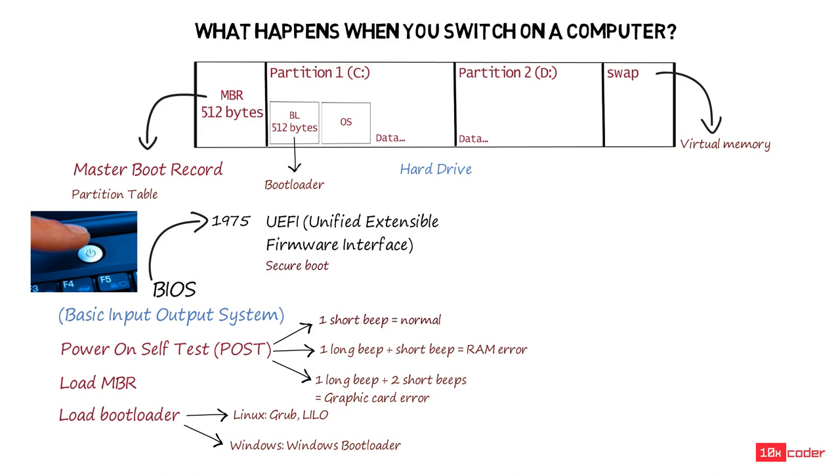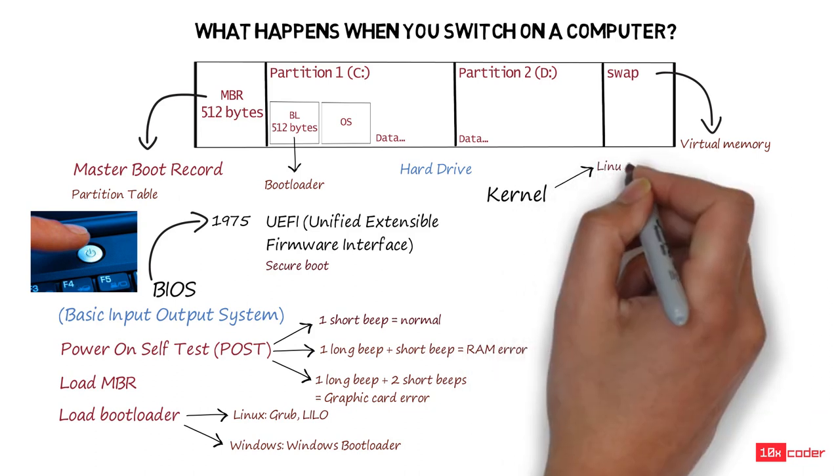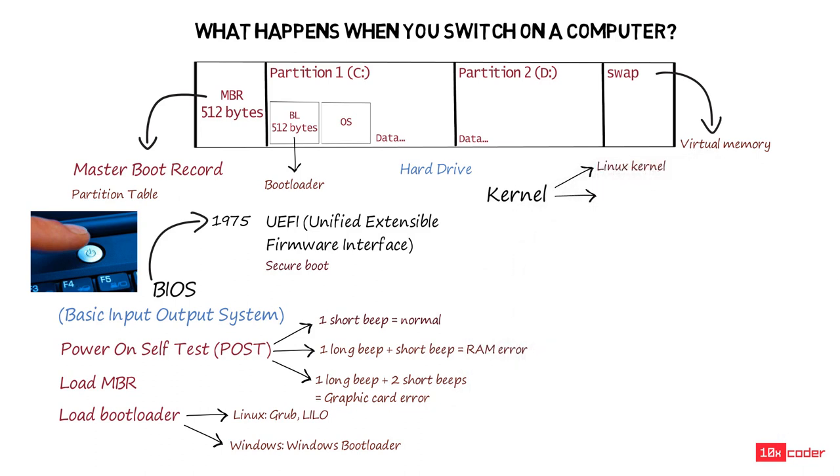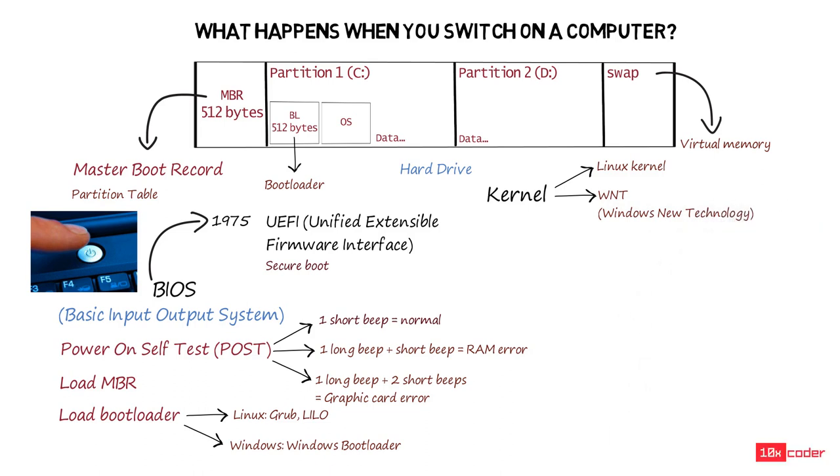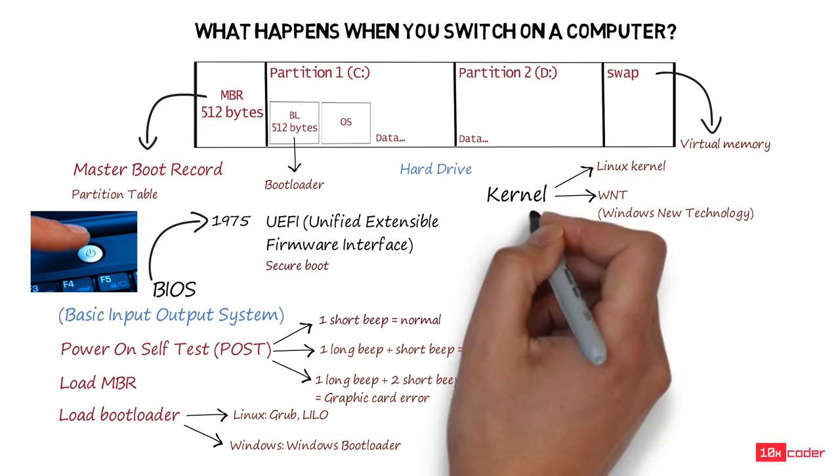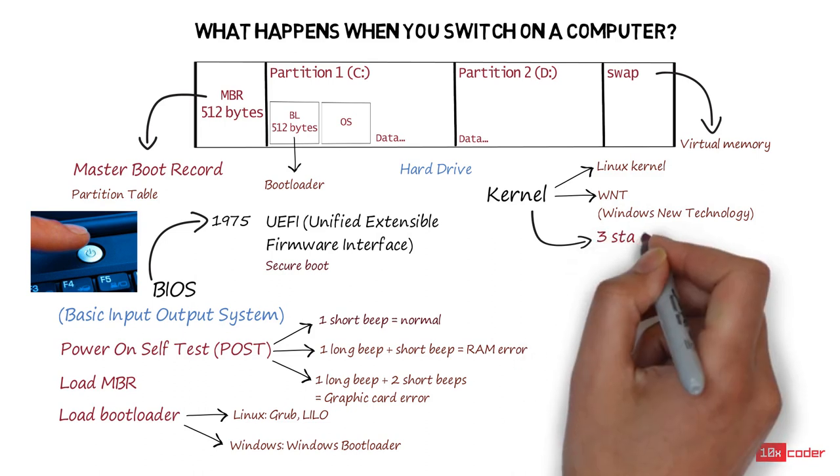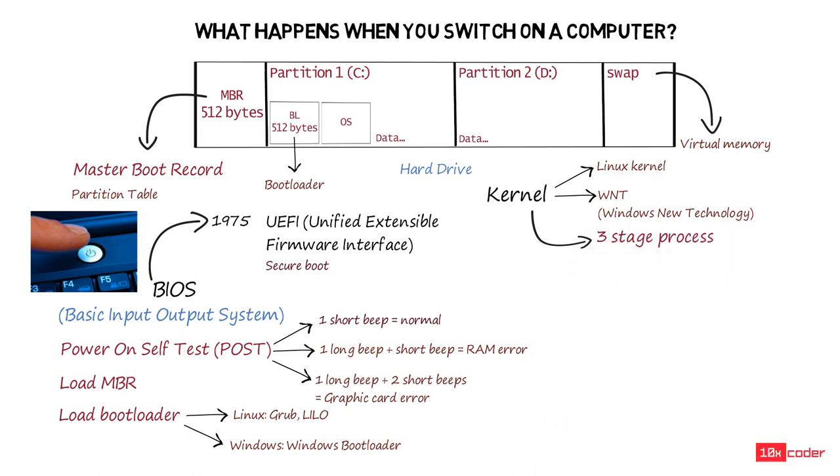Once the bootloader is copied successfully into the RAM, the BIOS gives the execution control to the bootloader. The bootloader is responsible for loading the first major piece of operating system into the RAM. This is called a kernel. If you're using Linux, then it is called a Linux kernel. On Windows, it is called WNT, which stands for Windows New Technology Kernel. Once the kernel is loaded into the RAM, the execution control is given to it and it starts a three-stage process to bring our computer to life.